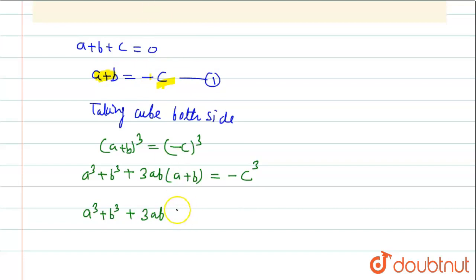So putting this value, a+b = -c. This is -c³.